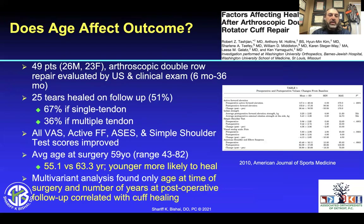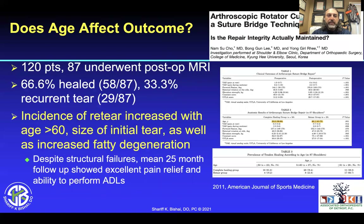Does age matter? In this article by Tazian — 49 patients, arthroscopy, double row repair — they found that the average age at time of surgery was 59. When comparing younger patients (55) versus older patients (63), the younger patients were more likely to heal. Looking at all these different outcomes — VAS, active forward flexion, ASES, and simple shoulder score — age at the time of surgery and the number of years at postoperative follow-up correlated with the best cuff healing.